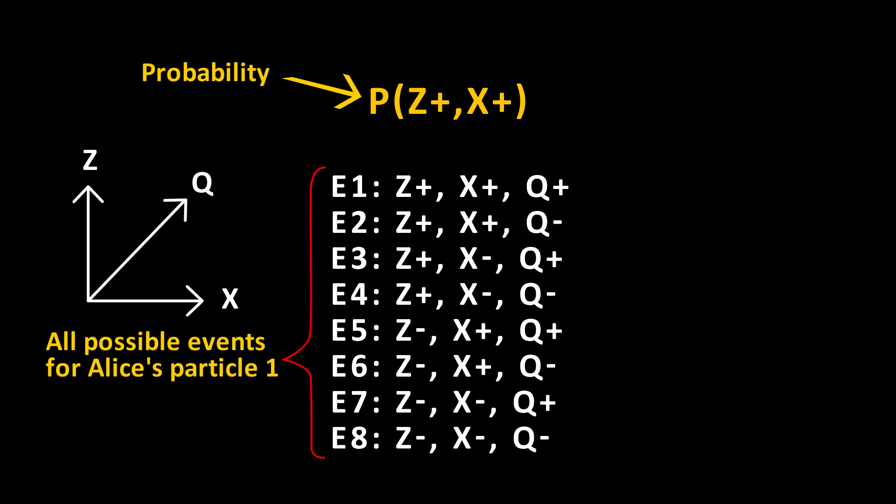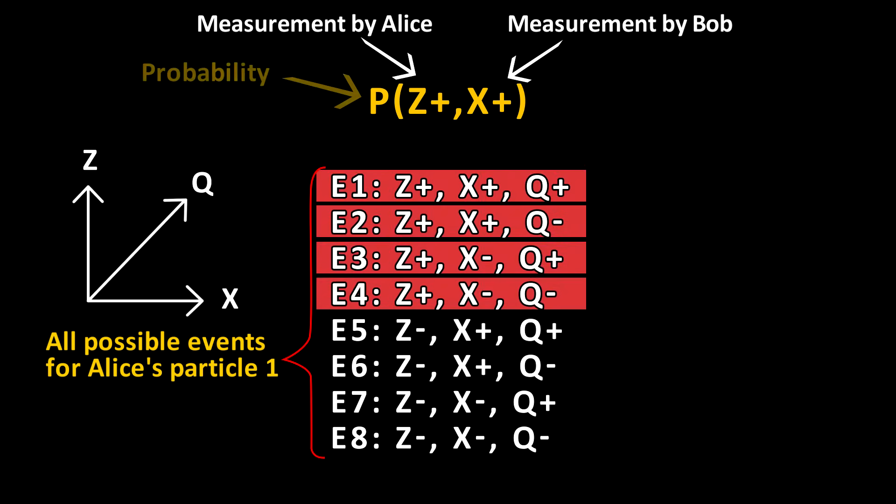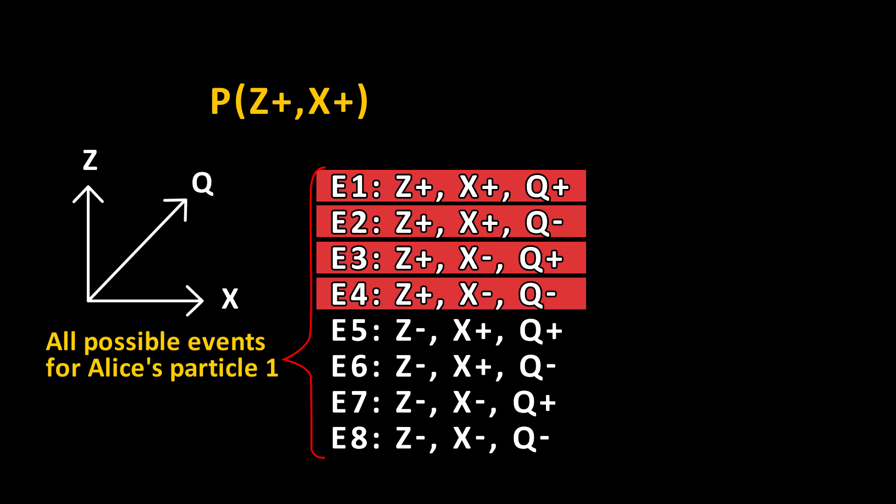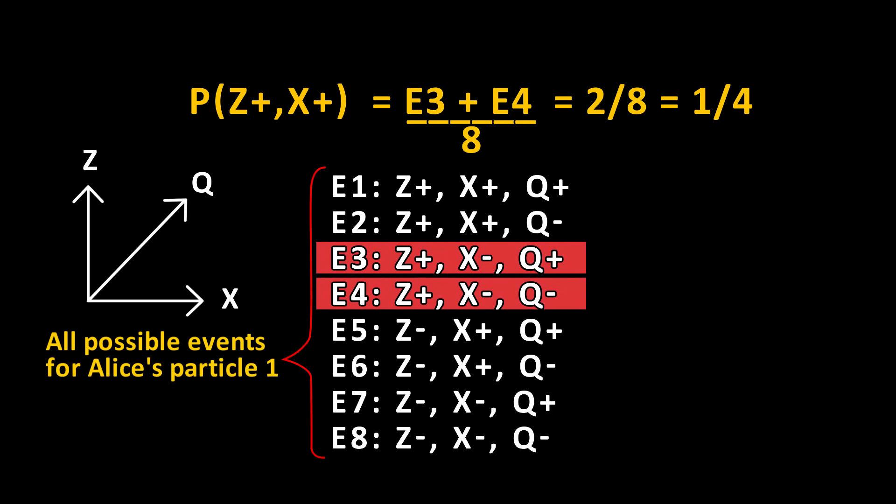Now let's ask the question, what is the probability that Alice measures in the z direction, gets a positive spin, and Bob measures in the x direction and gets a positive spin? Well, if the above case is for Alice, there are four events where z is positive. In order for Bob to get x positive, Alice would have to have measured x as negative. So these would be in events 3 and 4. To get the probability, we have to divide by the total number of events, which is 8.